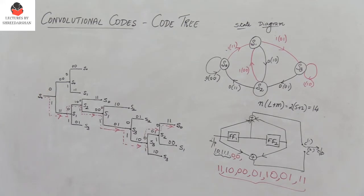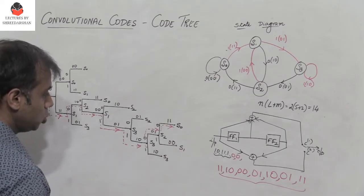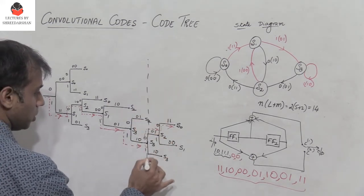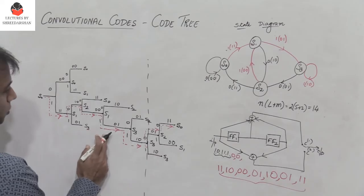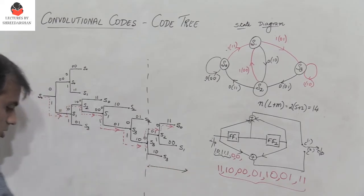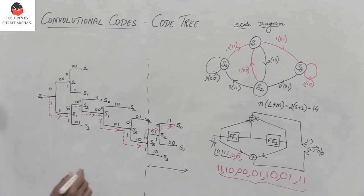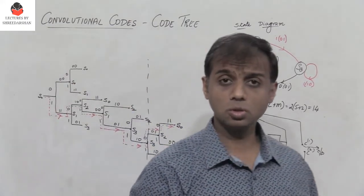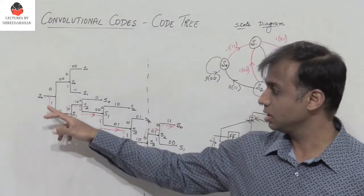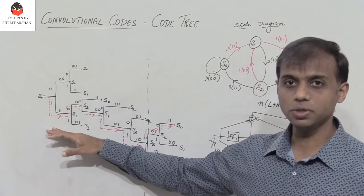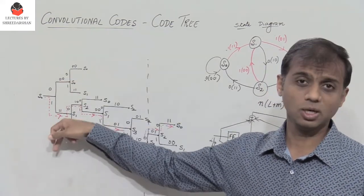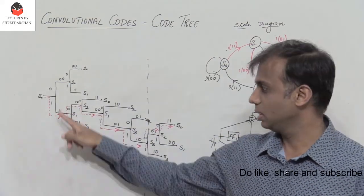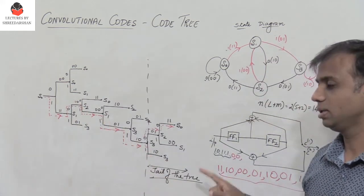There are two extra stages at the end, referred to as the tail of the tree — one for each flip-flop. In summary: if the input is 0 move upwards, if it is 1 move downwards, and write the outputs along the horizontal branches. By traversing the path, you can find the output very easily.